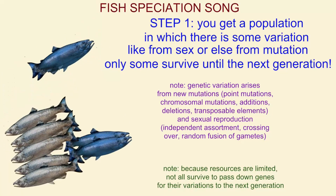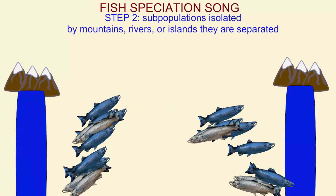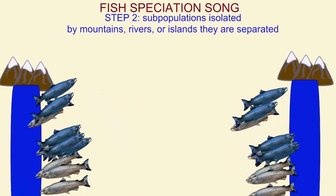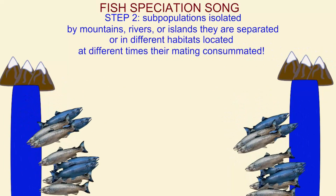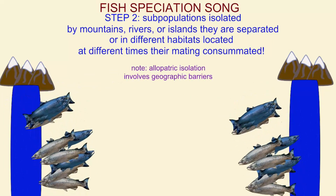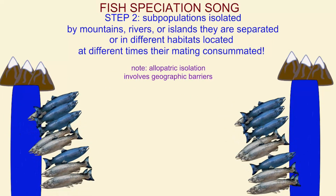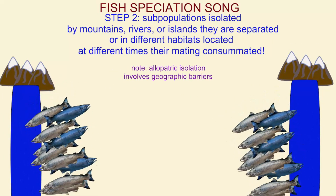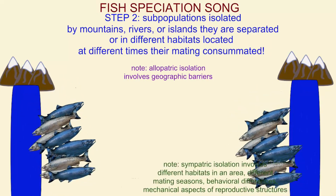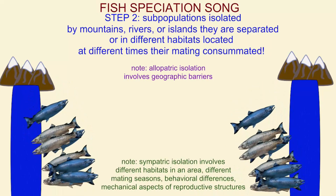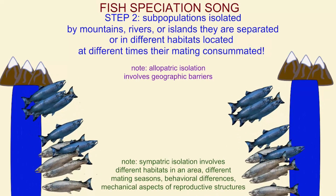Step two: some populations become isolated — mountains, rivers — they are separated or in different habitats, and at different times their mating is consummated.